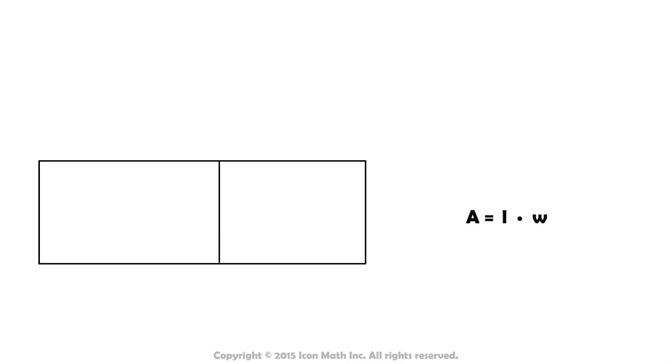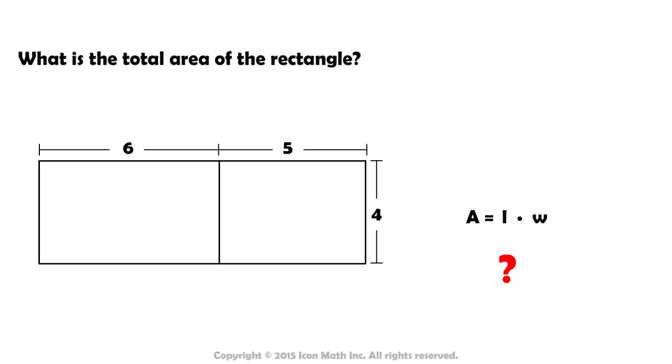Suppose we have two rectangles that are side by side and share the same width. How would we calculate the total area? There are two methods for determining the area of the entire figure.